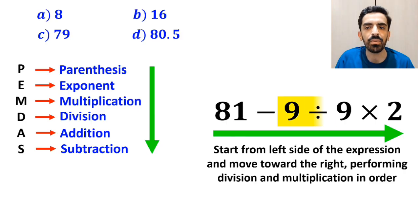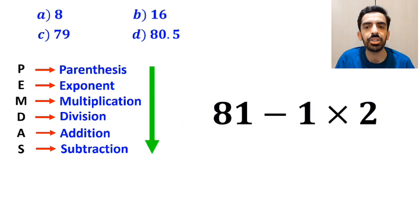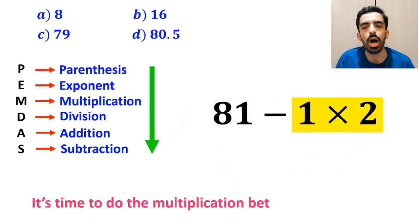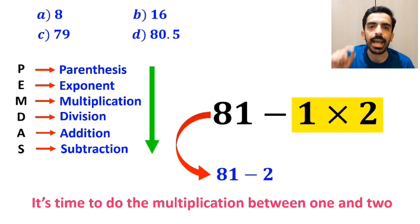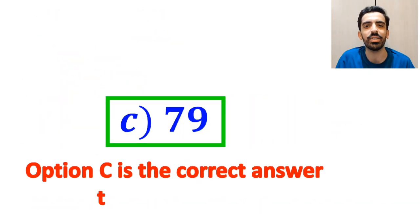So, first we perform the division between the two 9s, and this expression simplifies to 81 minus 1 times 2. Now, it's time to do the multiplication between 1 and 2, which gives us 81 minus 2. And finally, the value of this expression is equal to 79. Therefore, option C is the correct answer to this question.